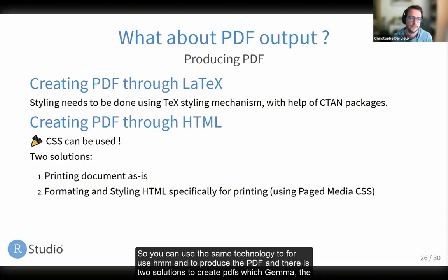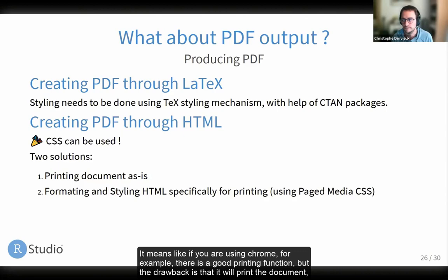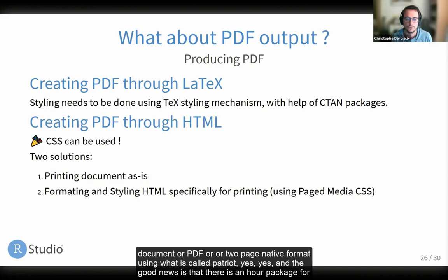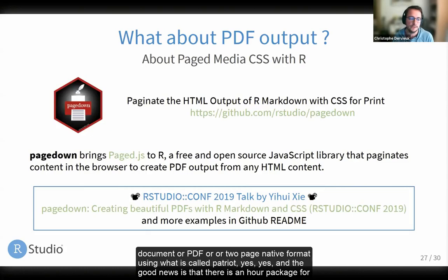There are two solutions to create PDFs through HTML. The first is simply printing the document — if you're using Chrome, there is a good print function. The drawback is it prints the document as you see it on screen, and a web page is linear and may not be suited for A4 or paginated formats. The second solution is to format and style the HTML specifically for printing using what is called Paged Media CSS. The good news is there is an R package for that called pagedown.